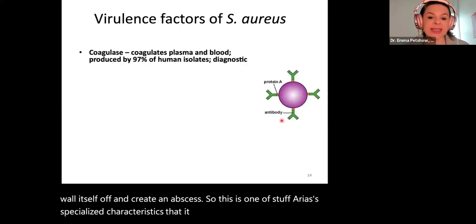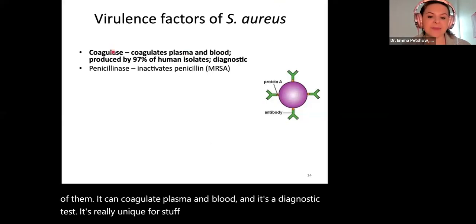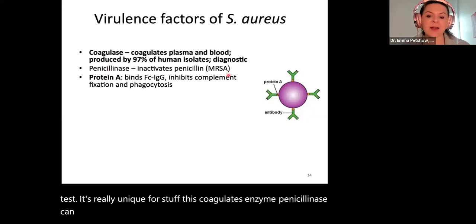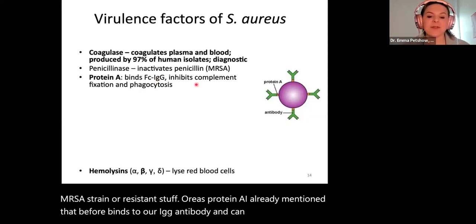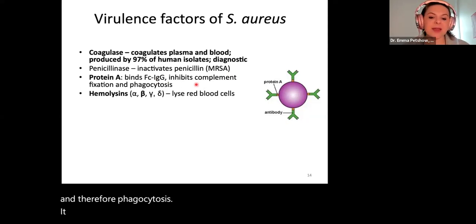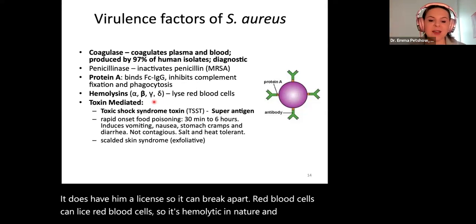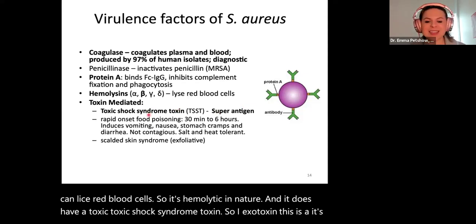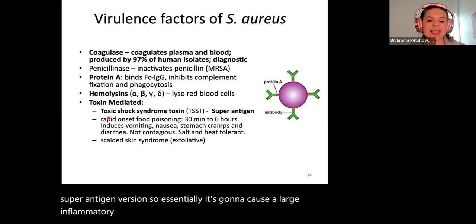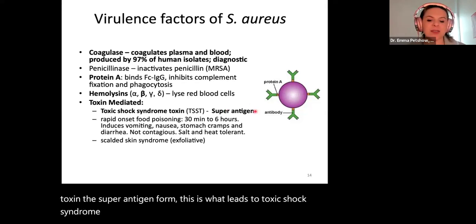Staph aureus has many virulence factors. Coagulase can coagulate plasma and blood and is a diagnostic test unique to staph aureus. Penicillinase can inactivate penicillin — that's how we get our MRSA strain. Protein A binds to IgG antibody and prevents opsonization and therefore phagocytosis. It has hemolysin, so it can lyse red blood cells — it's hemolytic in nature. It also has toxic shock syndrome toxin, a superantigen form, which causes a large inflammatory response leading to toxic shock syndrome — that's your toxic shock syndrome exotoxin.